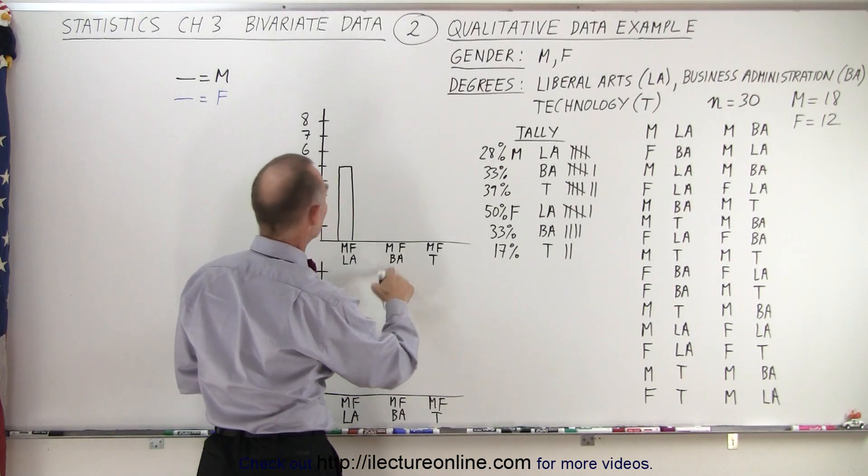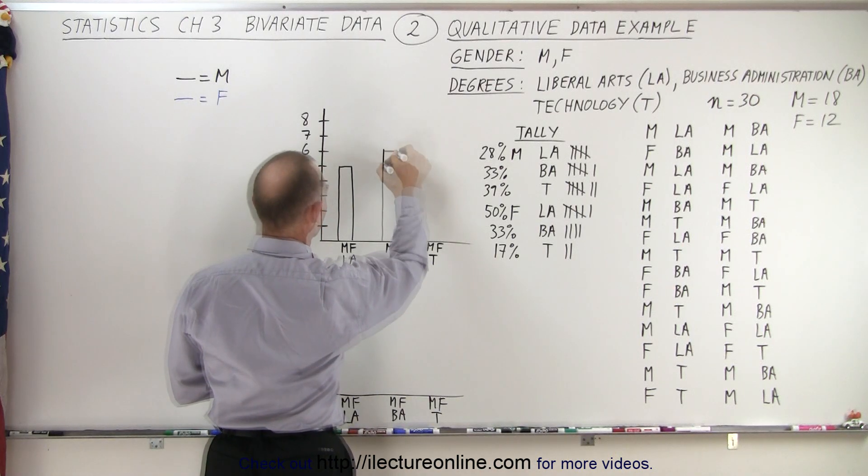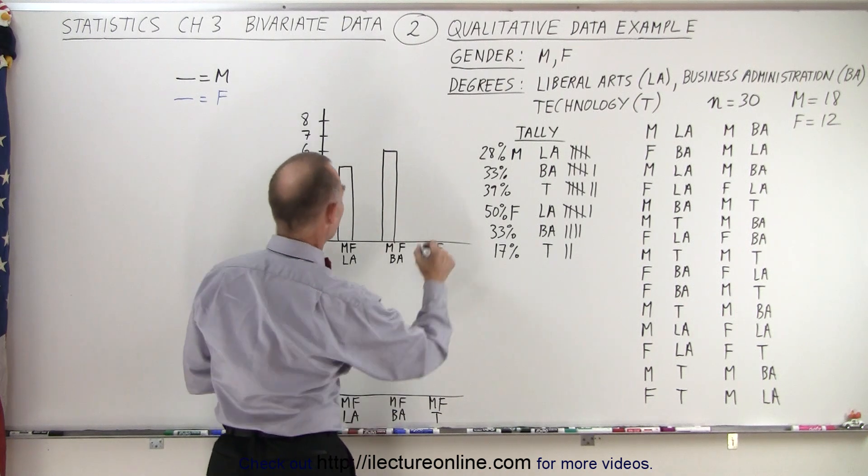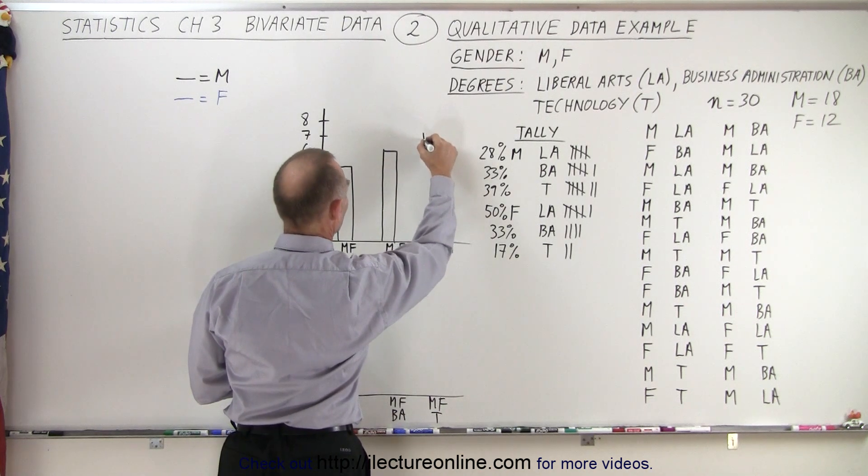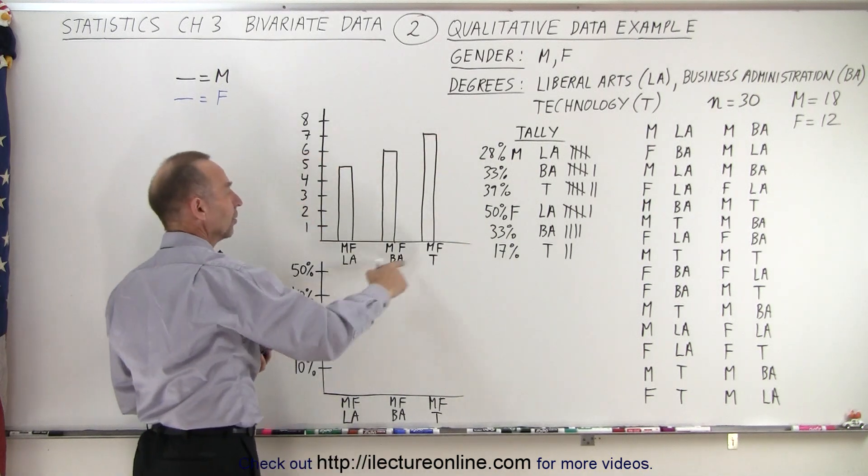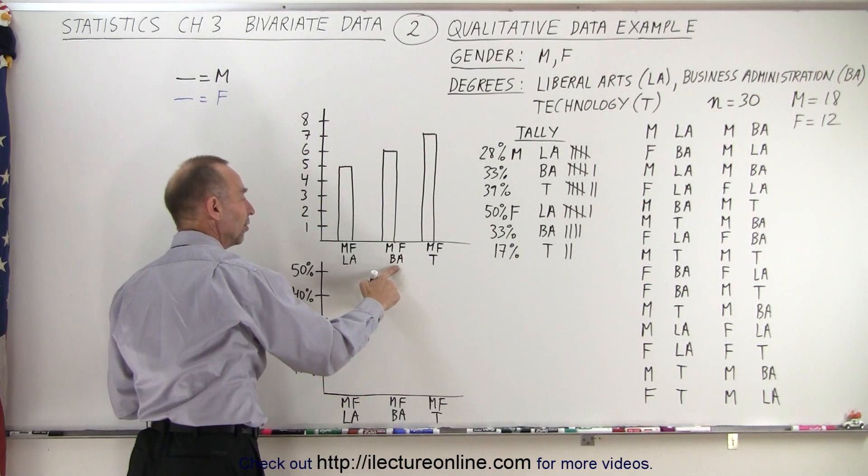Male Business Administration, 6 students. Like this. And for Technology, 7 students. For male students, they get degrees in Technology. So you can see a trend: mostly Technology, then Business Administration, then Liberal Arts degrees. Now for the females.